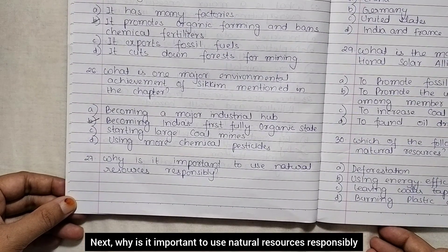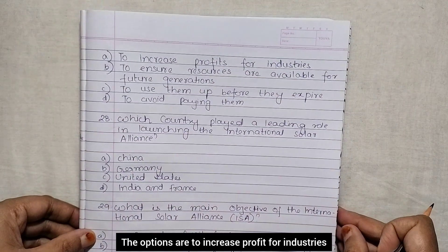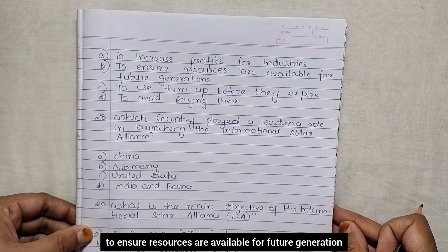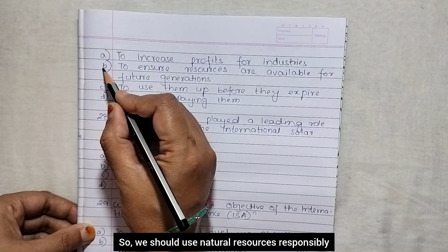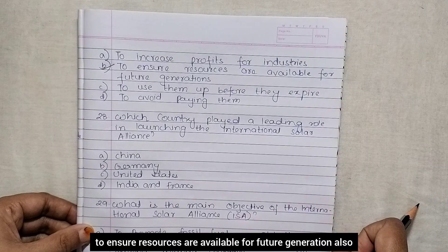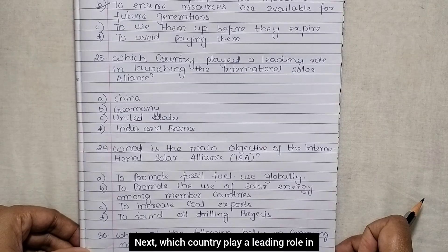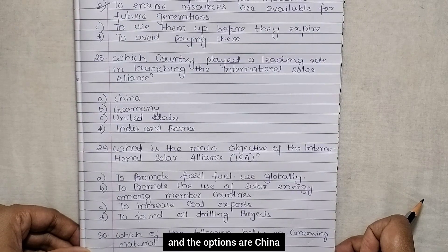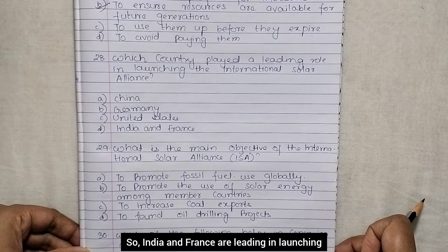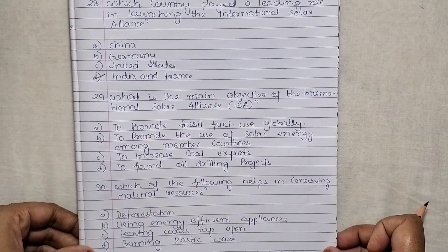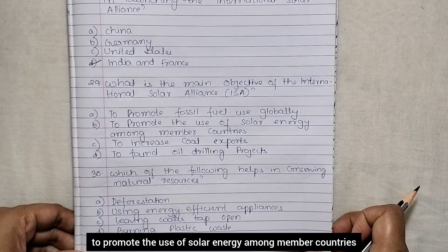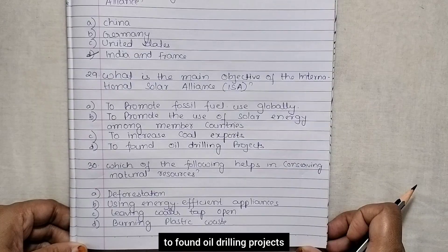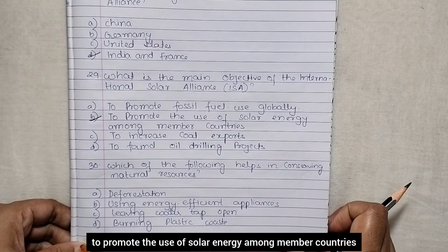Why is it important to use natural resources responsibly? Options are to increase profit for industries, to ensure resources are available for future generations, to use them up before they expire, to avoid paying for them. We should use natural resources responsibly to ensure resources are available for future generations. Which country played a leading role in launching the International Solar Alliance? India and France. The main objective of the International Solar Alliance is to promote the use of solar energy among member countries.